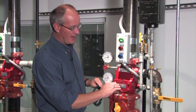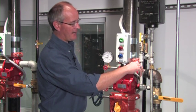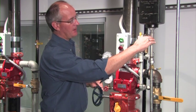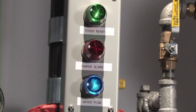Water is flowing through the riser, lifting the alarm check clapper, and water is exiting the trim, filling the retard chamber and pressurizing the switch. As you can see from our lights, we now have a water flow.